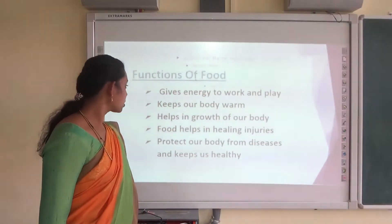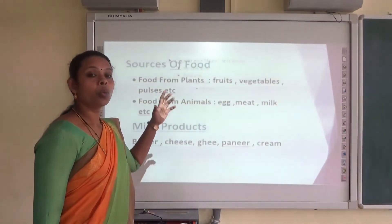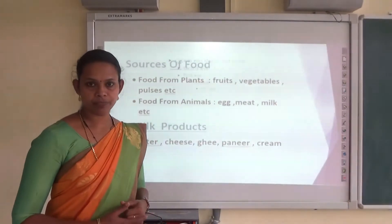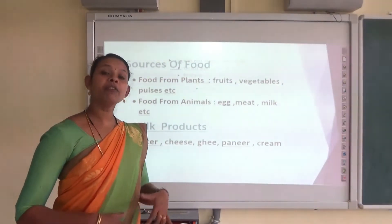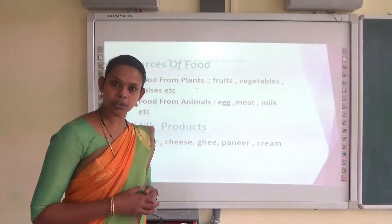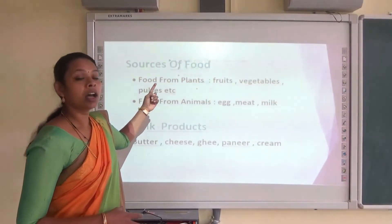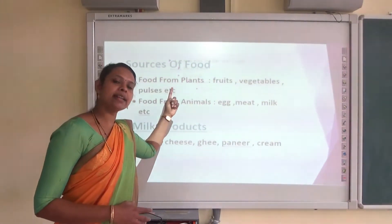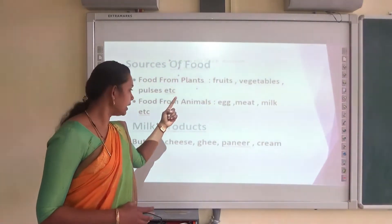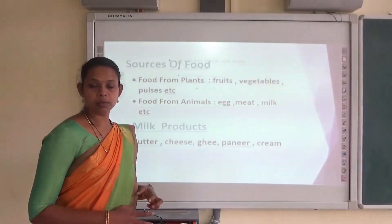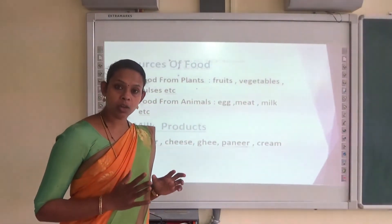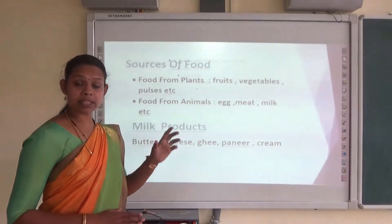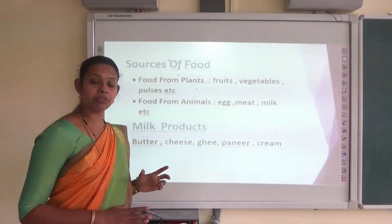Next we will see what are the sources of food, or from where we are getting food. First, we get food from both plants and animals. Both plants and animals provide us food. Which are the food items that we are getting from plants?